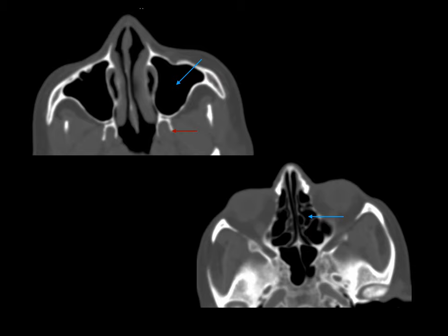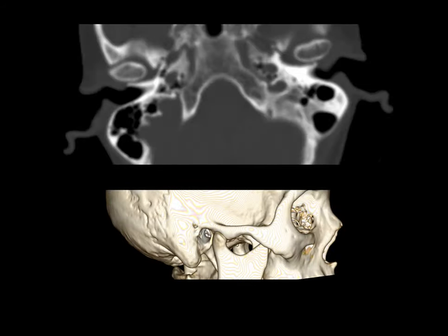Coming to the paranasal sinuses, look at the pterygoid plates — fractures there are very common. Sinus opacification, hemomastoid, and hemosinus may be present; look at the bilateral ethmoid and sphenoid sinuses. The temporomandibular joints are very important — check whether the condyles are within the TMJ fossa, and 3D imaging helps assess whether the condyles are in position.